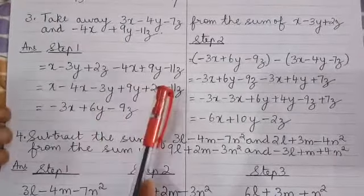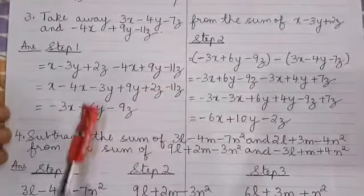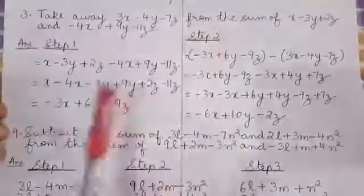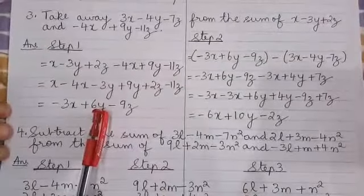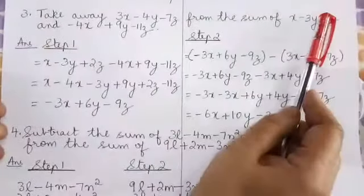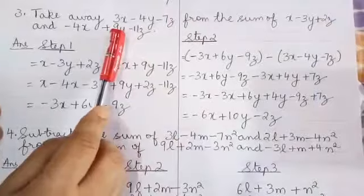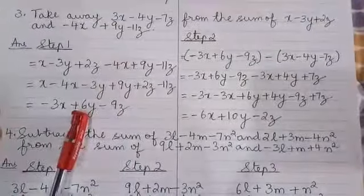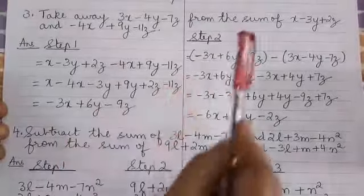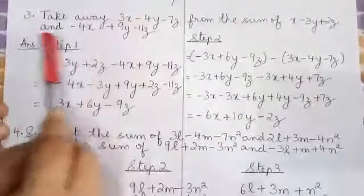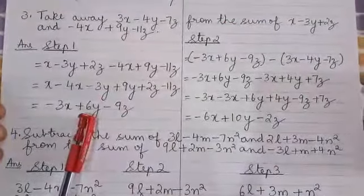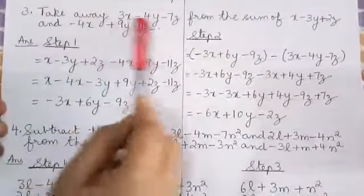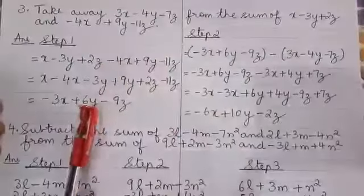Now read the question with this answer. Take away this expression from this expression — because the sum of these two expressions is this one. So let's read the question as: take away this expression from this one.